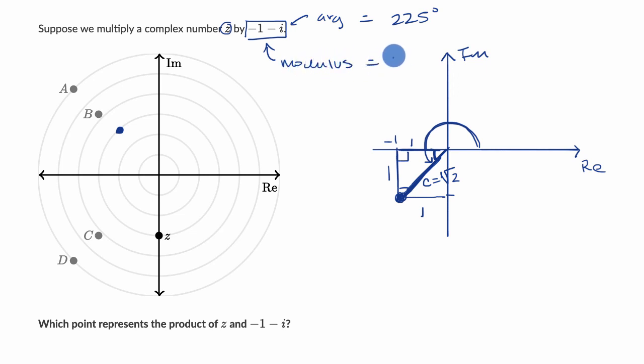Modulus is equal to √2, which is approximately a little bit more than 1.4. So let's just call it approximately 1.4. So not only are we going to rotate by 225 degrees, we're going to scale the modulus, the distance from the origin, by 1.4.